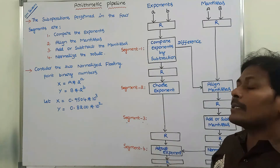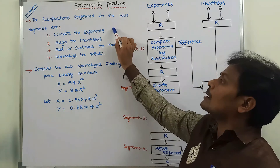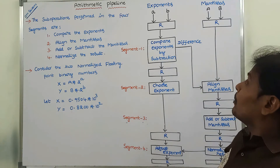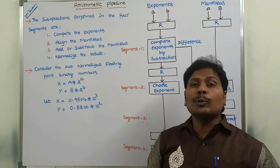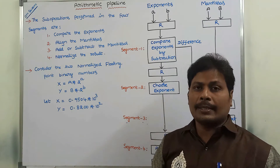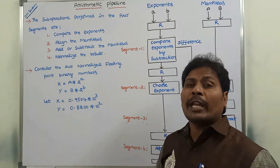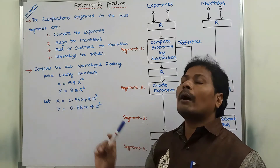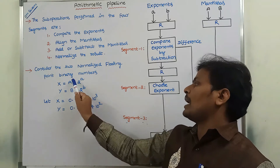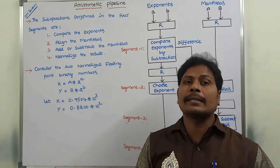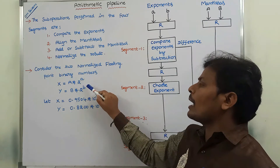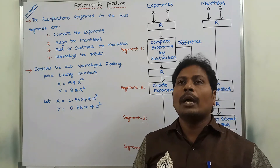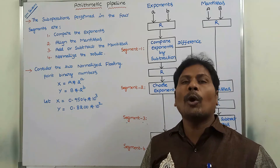In each and every segment, these four sub-operations can be performed. The inputs for the Arithmetic Pipeline are two normalized floating point numbers. The normalized floating point number can be represented in this form. Here, X and Y are called as two floating point numbers. Capital A and capital B are called as mantissas, and small a and small b are called as exponents. The base value is two.